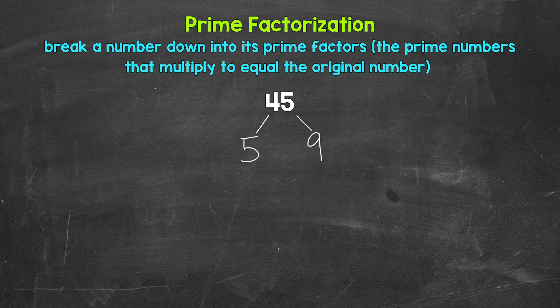Now keep in mind, depending on the number, there can be multiple different factors that we can use. For example, we could have started with 3 and 15 here for 45 as well. And that would work. There may be different paths we can take for these. But in the end, we will get the same prime numbers. And that's what's important.